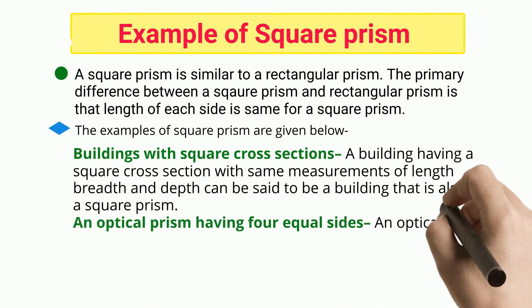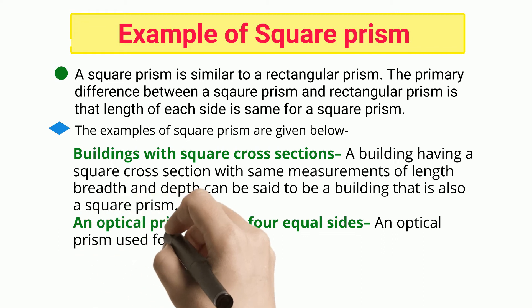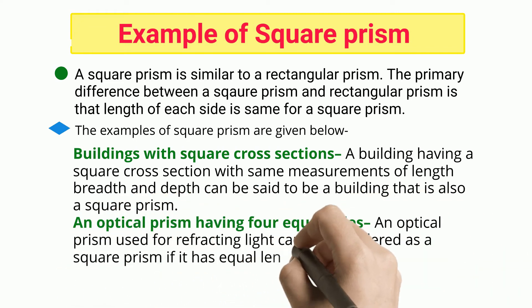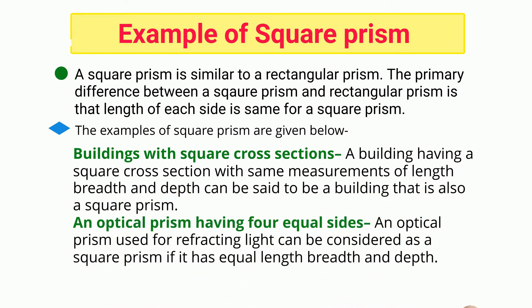An optical prism having four equal sides: an optical prism used for refracting light can be considered as a square prism if it has equal length, breadth, and depth.